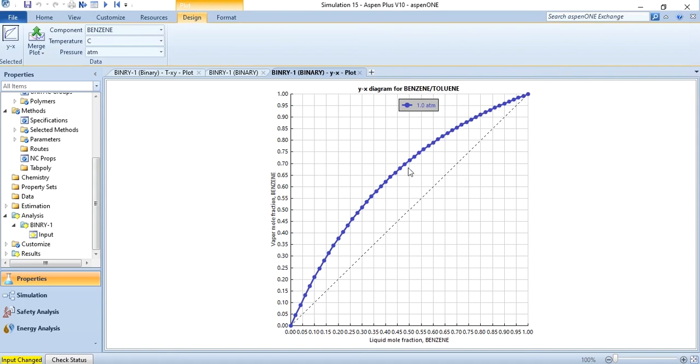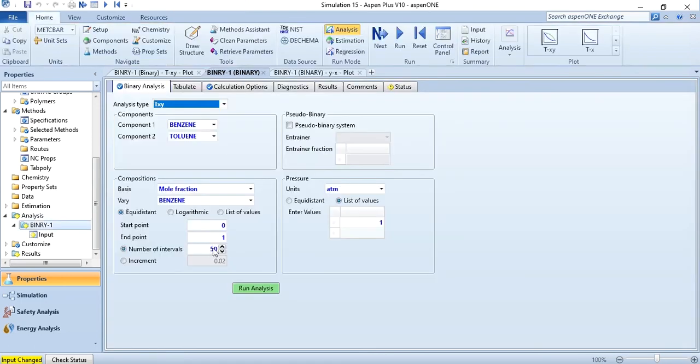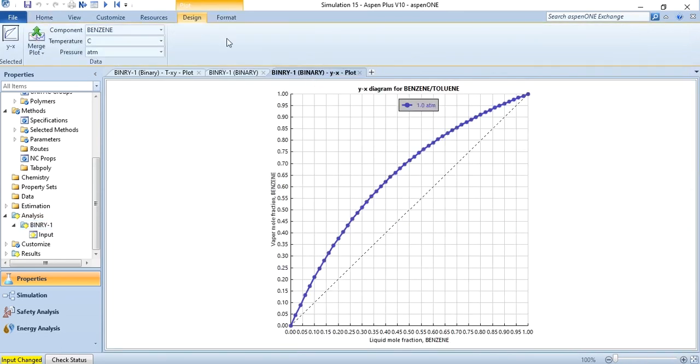And you see it is finely split because you have took a very small step size. If you increase the step size from here by decreasing the number of intervals, for example if I reduce it to 40 and analysis is run again.